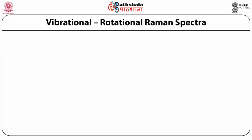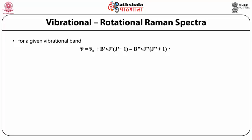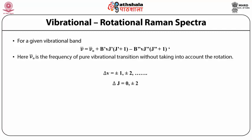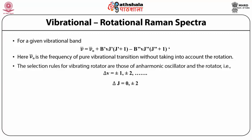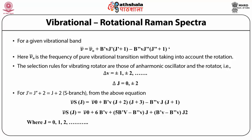Vibrational-rotational Raman spectra. For a given vibrational band, ν = ν₀ + B'(ν)J'(J'+1) − B''(ν)J''(J''+1). Here ν' is the frequency of pure vibrational transition without taking into account the rotation. The selection rules for the vibrating rotator are those of an anharmonic oscillator and a rotator: Δν = ±1, ±2, etc., and ΔJ = 0, ±2. For J' = J'' + 2 = J + 2, this is the S branch.